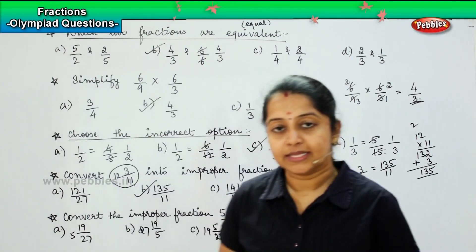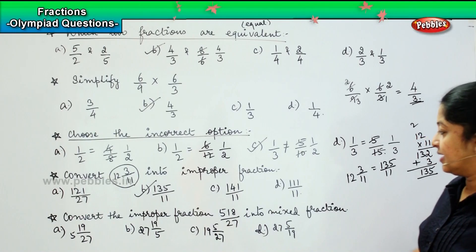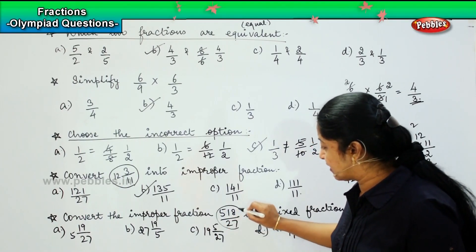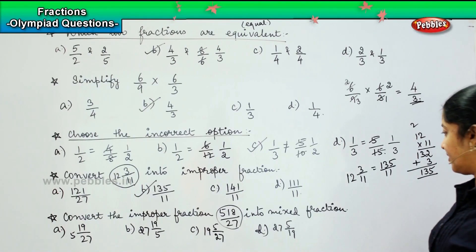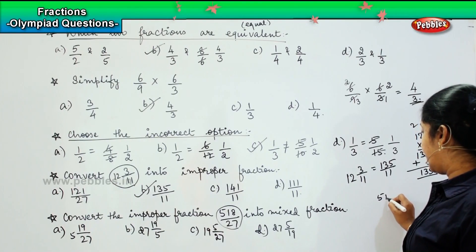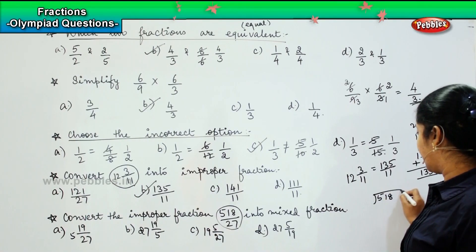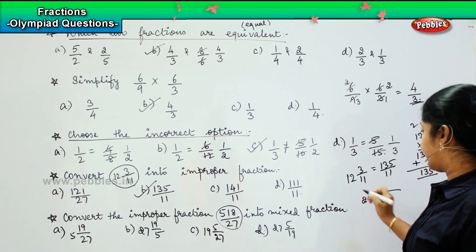Now in this question they have given us an improper fraction and asked us to convert it into mixed fraction. How will we do it? 518 divided by 27.